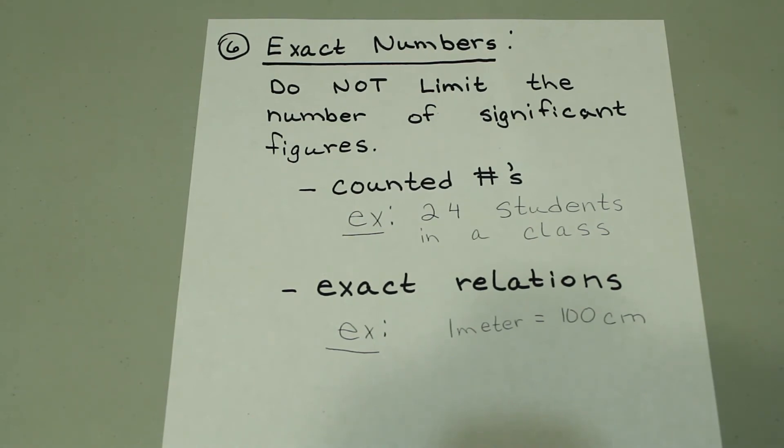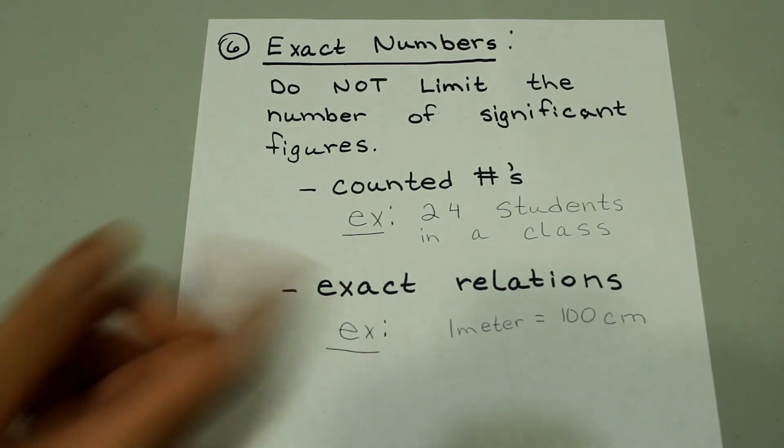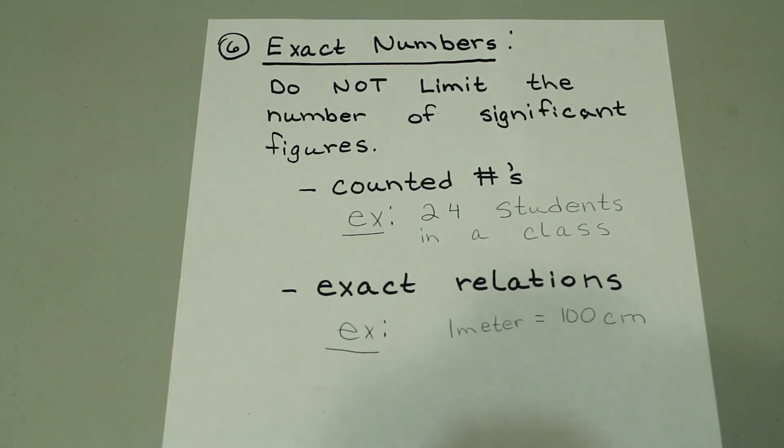Exact relations are also exact numbers. We know there is 100 centimeters in one meter. There's no uncertainty about that. So if we use this as a conversion factor, we don't have to worry about significant figures.